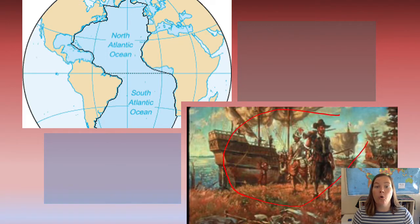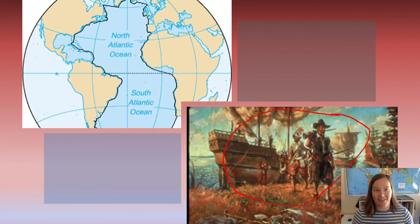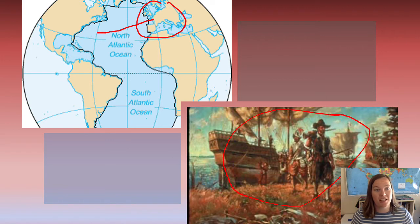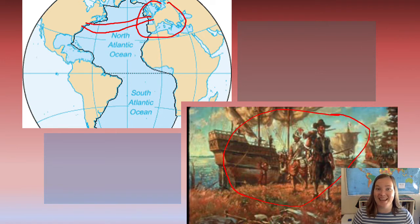Who were the Europeans? Europeans are people from Europe. They crossed the Atlantic Ocean in the 1600s to come to the United States.